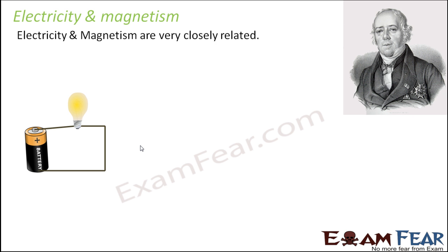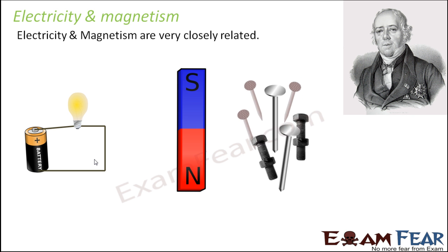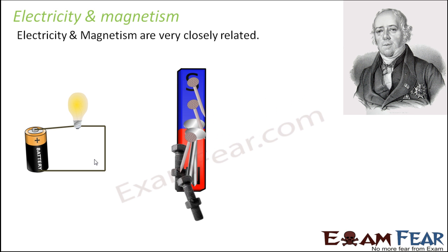It was found that these two were very closely related. If you think of electricity, what can you think of? Maybe a bulb connected in a circuit to the battery and then the bulb starts glowing because electric current is flowing through the circuit. And when you think of magnetism, it is like the nails getting attracted towards the magnet. Because in the region around this magnet, there is a force which exists and all these nails can experience that force and get attracted. So that is magnetism.